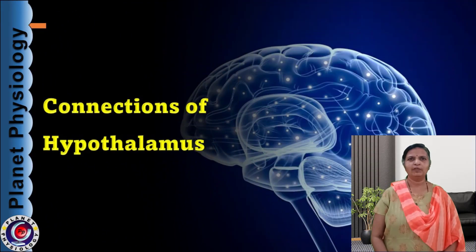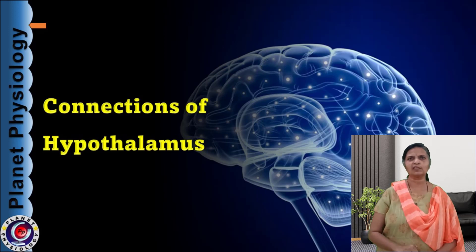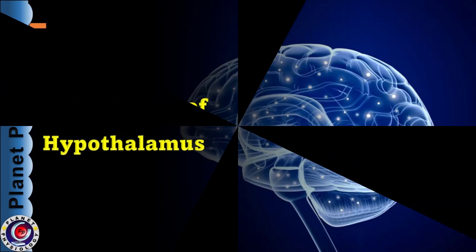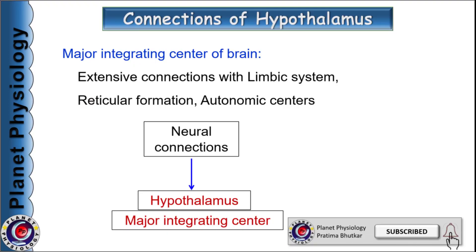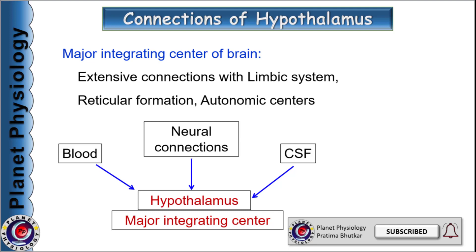Now let us begin with the connections of hypothalamus. Understanding connections of any part of the nervous system is essential to understand its functions as well as its clinical aspects. Hypothalamus has extensive connections with the limbic system, reticular formation, and autonomic centres in the brainstem and spinal cord. It also receives a variety of inputs from blood as well as CSF, and its outputs are also mediated via these three routes — neural, via blood, and via CSF. Hence, hypothalamus is referred to as the major integrating centre of the brain.